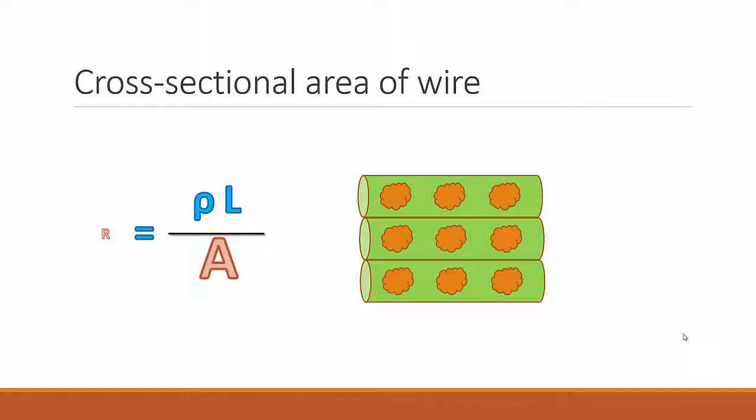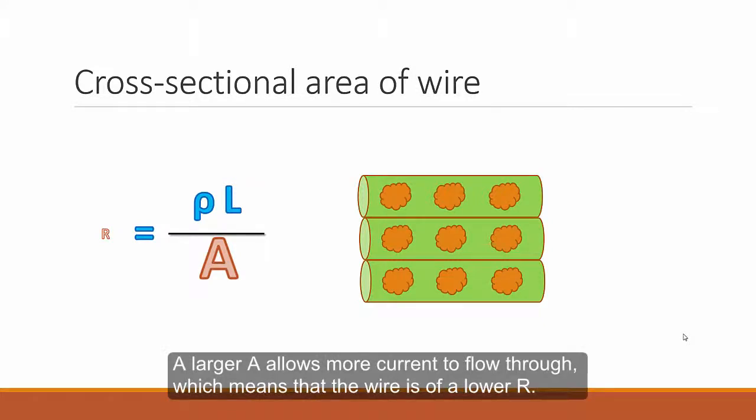Thus, you can come to a conclusion that a larger A allows more current to flow through, which means that the wire is of a lower resistance.